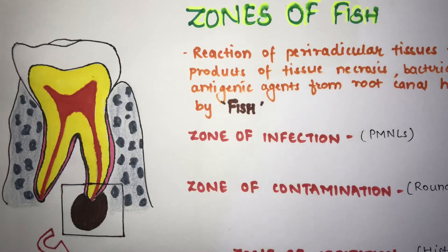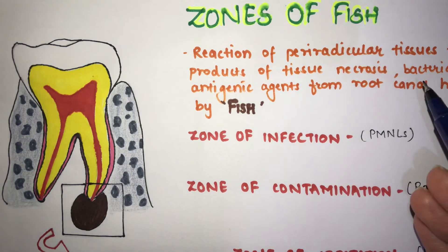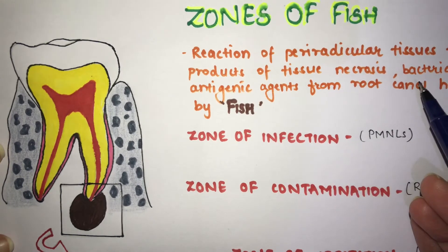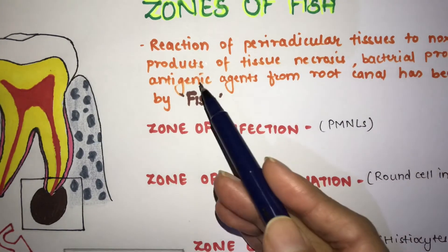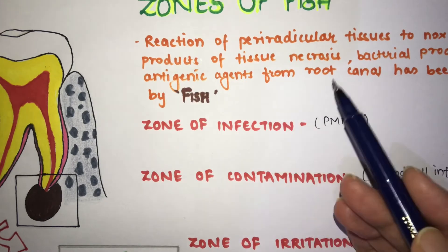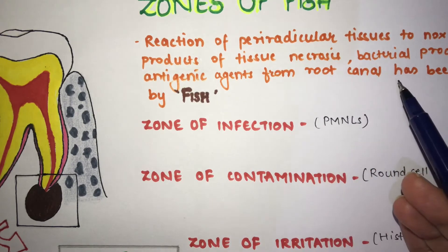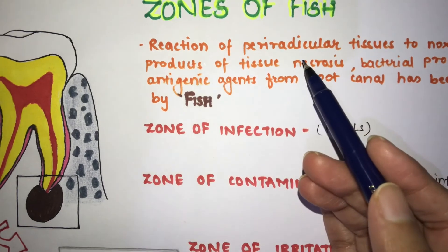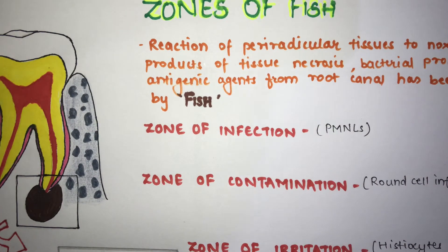The topic is Zones of Fish, a subtopic from the rationale of endodontic treatment. The Zones of Fish describe the reaction of the periradicular tissue to the noxious products of tissue necrosis, bacterial products, and antigenic agents from the root canal. This was described by Fish, and hence it is known as the Zones of Fish.